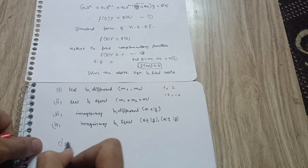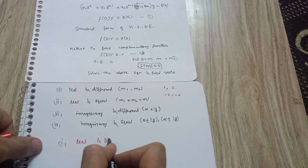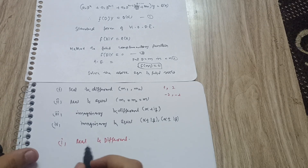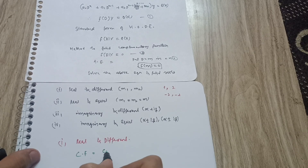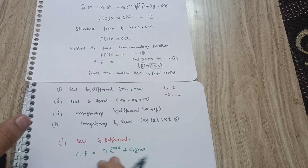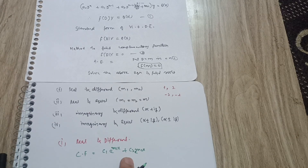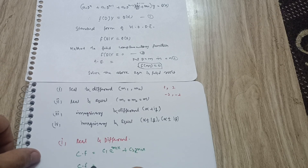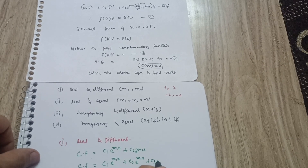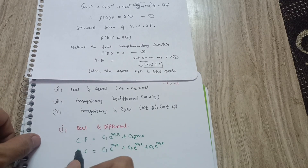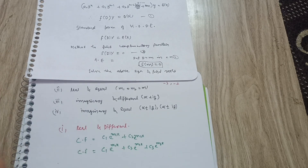For real and different roots, the complementary function is: CF = c₁·e^(m₁x) + c₂·e^(m₂x). If there are three roots, you extend it to: c₁·e^(m₁x) + c₂·e^(m₂x) + c₃·e^(m₃x), and so on for m₁, m₂, m₃, m₄. You should remember these formulas.